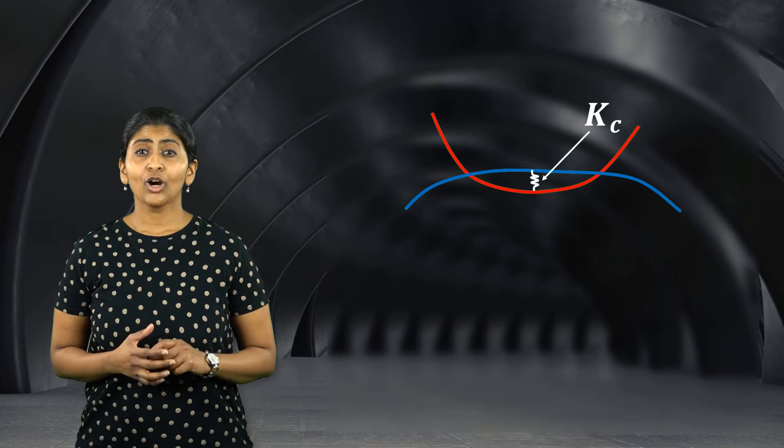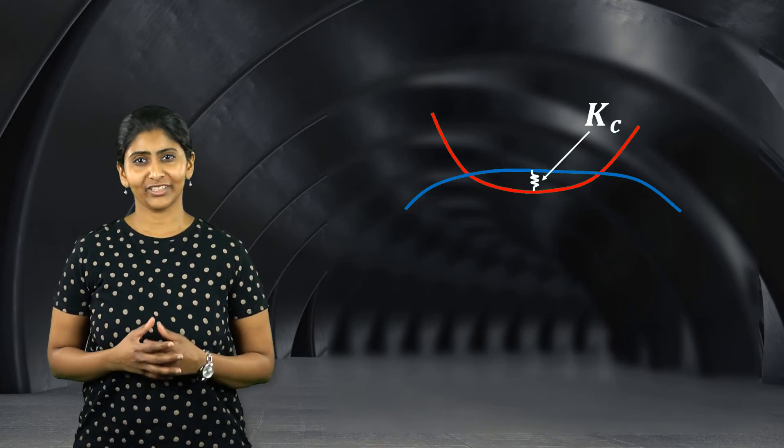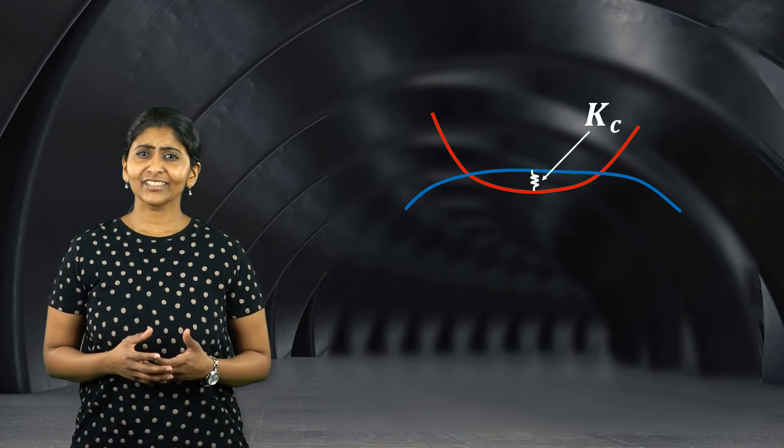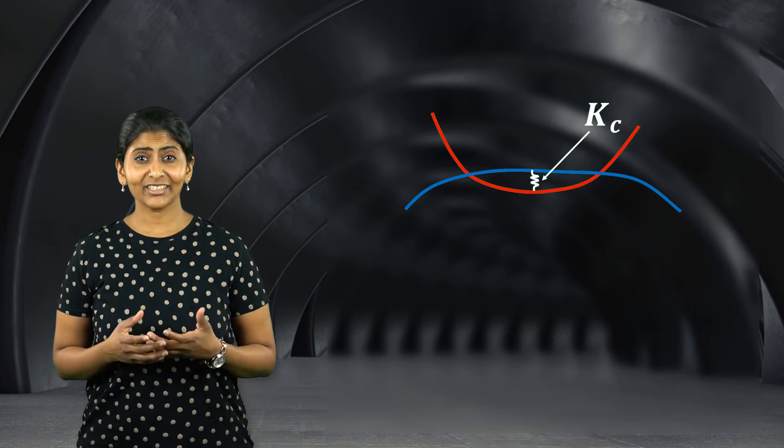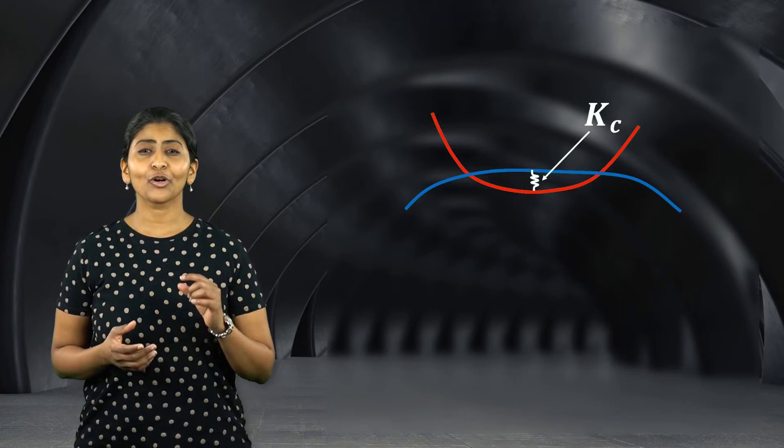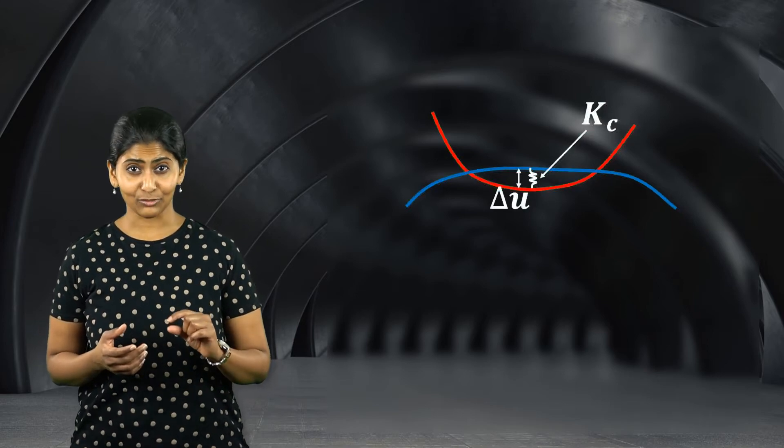Now ideally, there should be absolutely no penetration between the two contacting bodies. But for this to happen, the stiffness of the contact spring would need to be close to infinity. Since it is not possible to implement this practically, the penalty formulation allows for a small amount of penetration, delta u, between the two bodies.